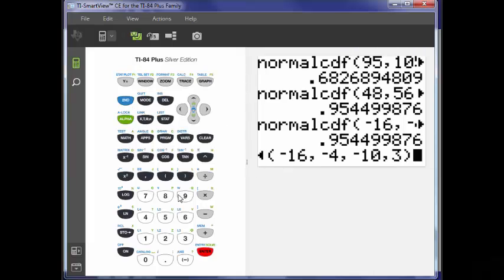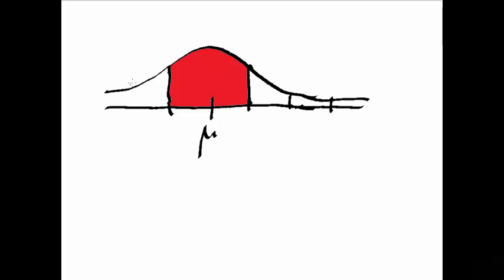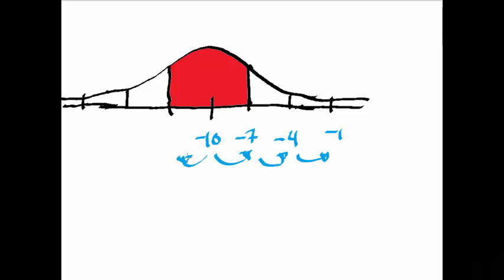What about three standard deviations up or down from the mean? Staying with mean negative 10 and SD 3: three times 3 is 9, so 9 down from negative 10 is negative 19, and 9 up from negative 10 is negative 1. We're asking what's the chance this random variable falls within three standard deviations either side of the mean — the chance it falls between negative 19 and negative 1. You always enter the left endpoint, then the right endpoint, mean, and standard deviation in that order.